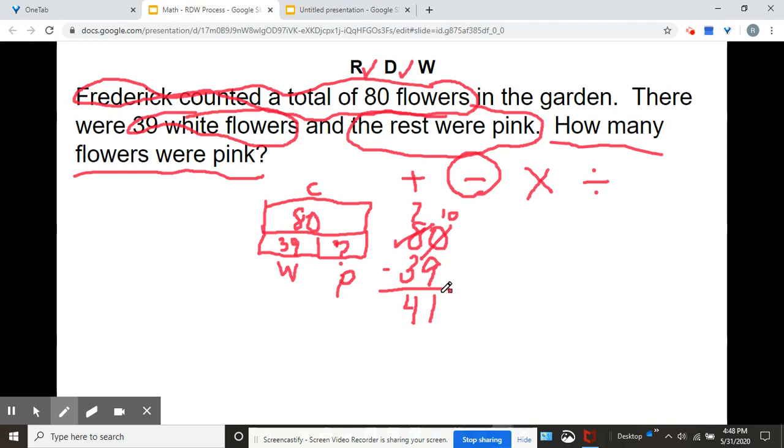But I'm not done yet. I have to write a statement. When you're writing a statement, you always want to go back to the question. The question asks, how many flowers were pink? So my statement would be 41 flowers were pink. That is a statement. A statement is a complete sentence, and you have your period. All right, so I'm going to put a check mark there because I wrote the number sentence and the statement.